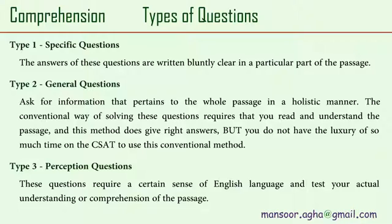When it comes to attempting questions, students make the mistake of attempting every question with the same zest, procedure, and time. Actually, questions are of three different flavors — the three types not only need a different amount of time to solve but also demand a different method and attitude. The specific questions are the most abundant and the most easy. The answers to these questions are written bluntly clear in a particular part of the passage. All you need to do is understand what data, facts, or figures the question is asking for, go back to the passage, find the required information, and match it with the four options. Three options will not match and one will, giving you your answer objectively without taking a lot of time.